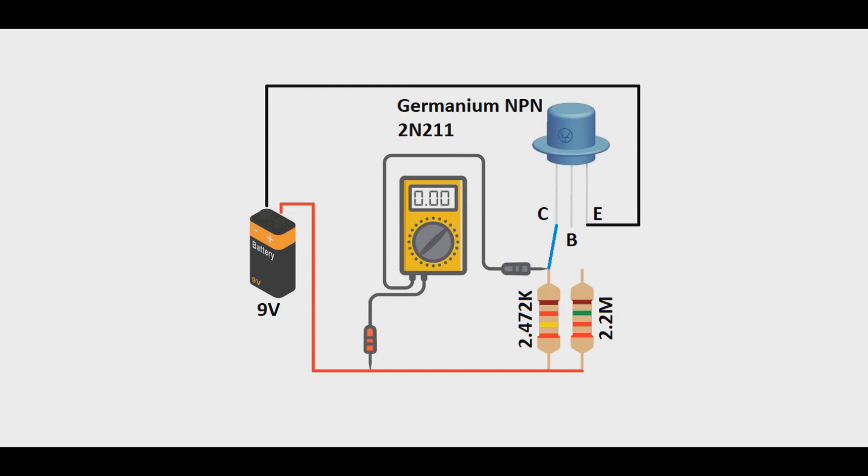Notice how we flip the polarity on our power supply here? And that's because we went from a PNP to an NPN transistor. On our breadboard, we got a voltage readout of 0.084 volts on this collector resistor. So, 0.084 divided by 2.472 is equal to 0.034 milliamps or 34 microamps of leakage, which is actually really good.